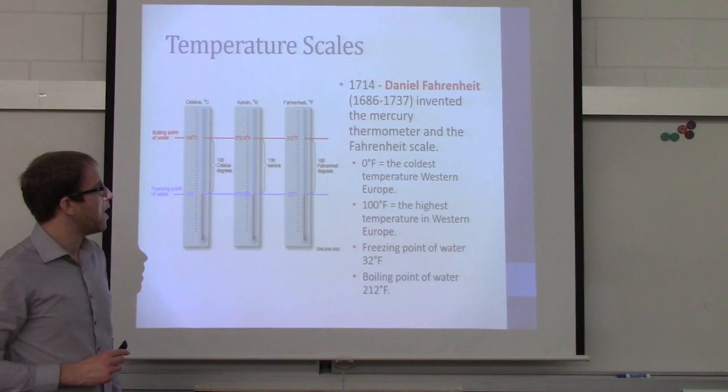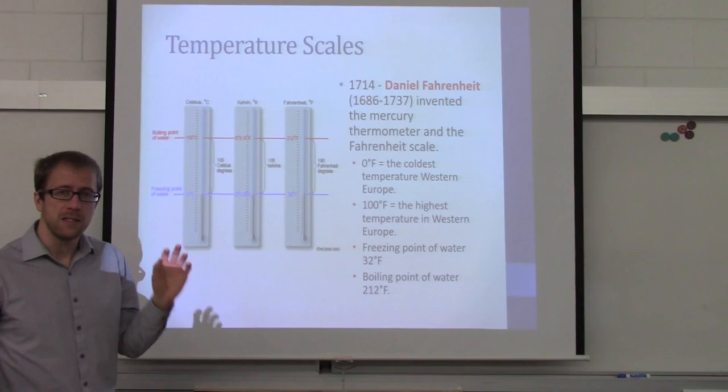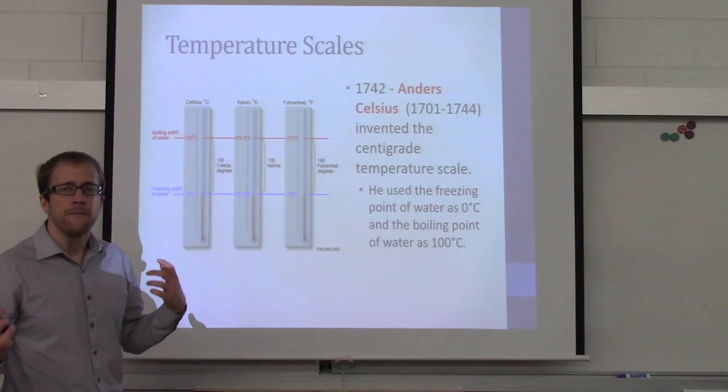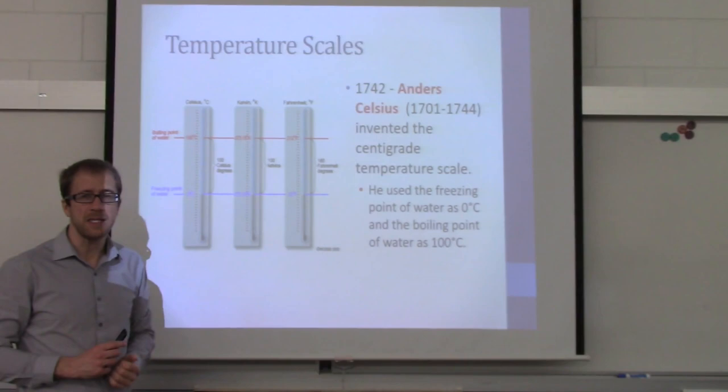Zero degrees Fahrenheit was the coldest temperature in Western Europe, which is why they set the Fahrenheit scale at zero. The Celsius scale came along next — Anders Celsius was the one who created it — and he based the scale upon the freezing point and boiling point of water. Zero degrees Celsius is the freezing point of water; 100 degrees Celsius is the boiling point of water.